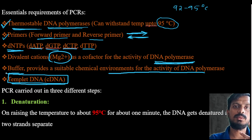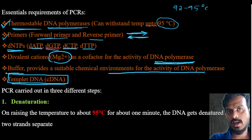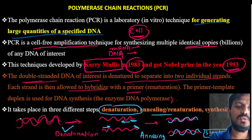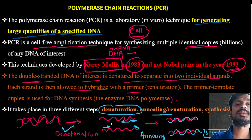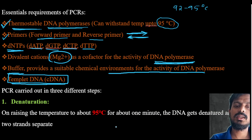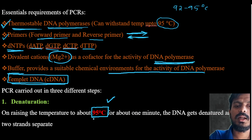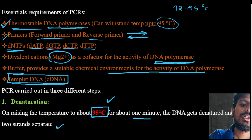PCR has three major steps: denaturation, annealing, and synthesis. Denaturation means from the intact DNA, the two DNA strands basically separate from each other. This denaturation step is carried out at 95 degrees centigrade. This temperature has been asked in the GPAT exam — around 95 degrees for about one minute, the DNA gets denatured and the two strands get separated.